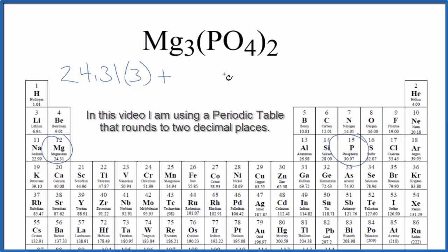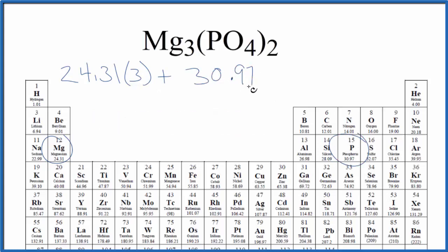Then for the phosphorus, that's 30.97 grams per mole, plus the oxygen, 16.00 grams per mole. We have four oxygens here, so multiply that by four.